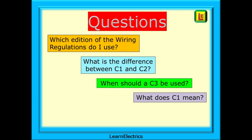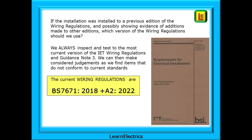Is there an easy way to distinguish between a C1 and a C2? And when should a C3 be used? So this video will keep things simple. There will be a couple of tips on how to look at the different codes, and these will help you to understand the logic behind the codes.